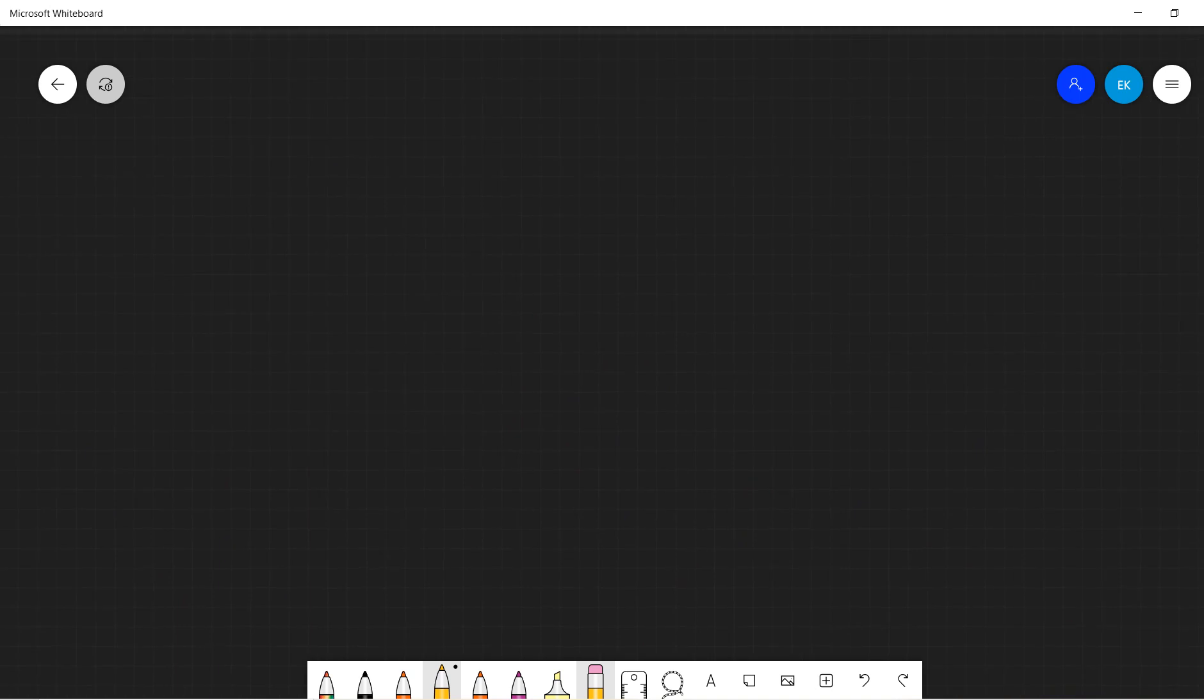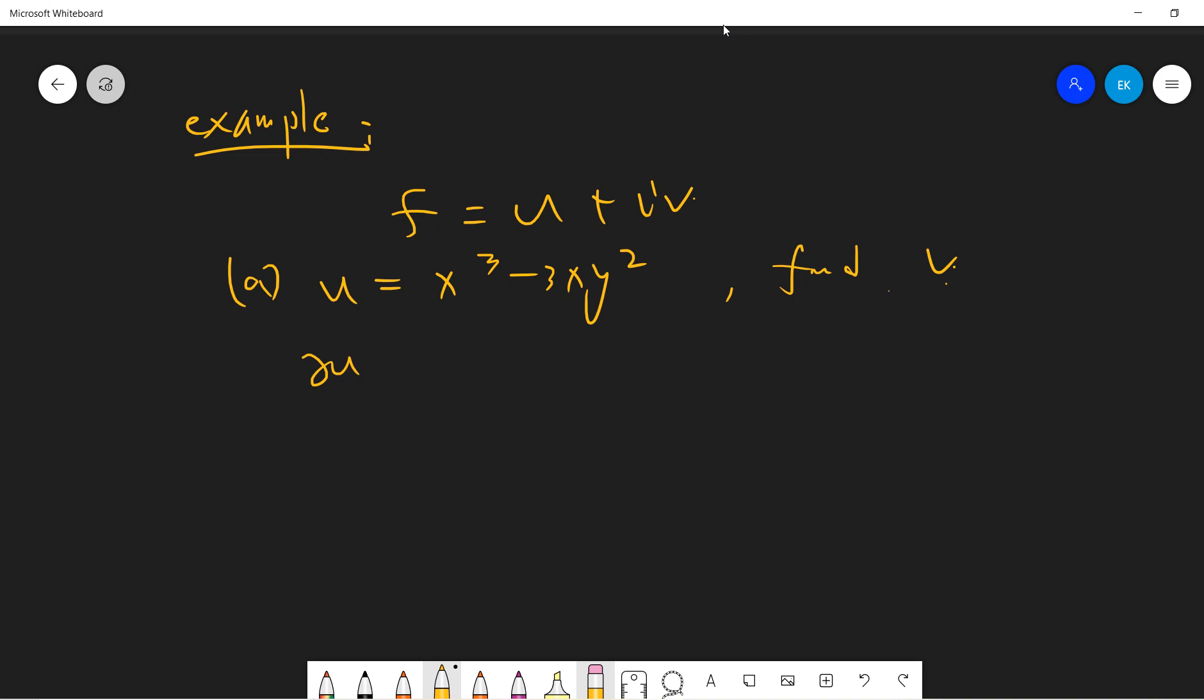Let's solve an example. We have f equals u plus iv, and we want to find v if u is x cubed minus 3xy squared.